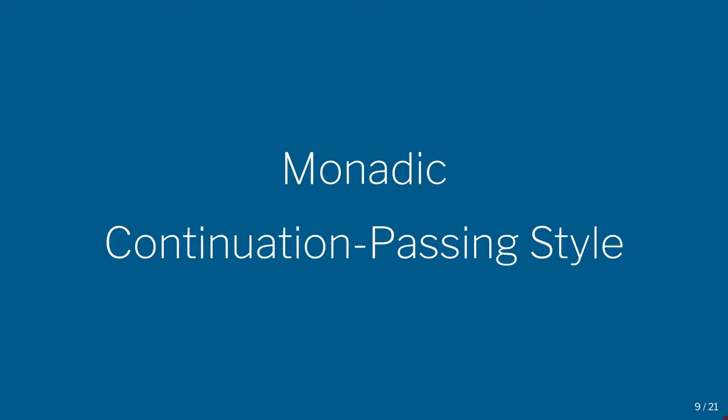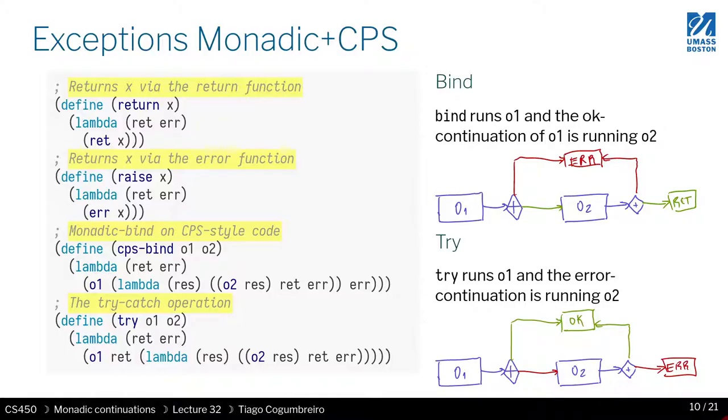So now I want to introduce the idea of monadic continuation passing style. As we talked about before, this idea where we want to chain two operations that are in CPS style together. And of course, whenever you do that, you're essentially talking about bind. So how does bind work? That's what I tried to explain in the past video, but now I want us to think about it more abstractly and think about how to do more operators using this API.